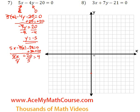So we start at 0, 1, 2, 3, 4. There we go. Now we can just connect the dots and graph the line. There we go. So this is 5x minus 4y minus 20 equals 0.